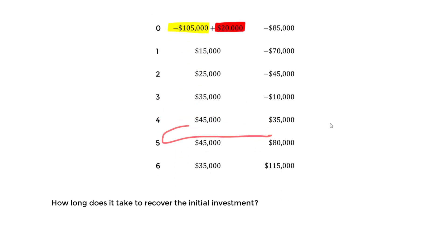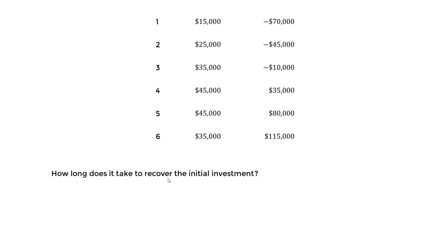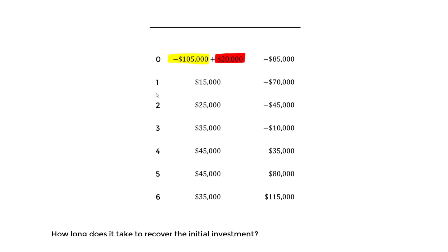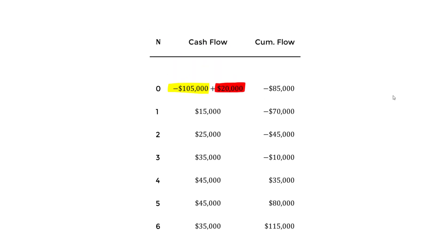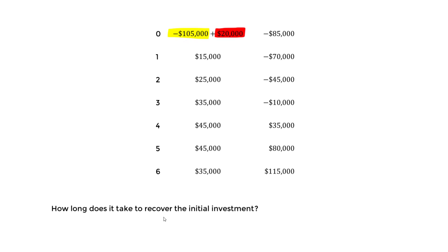The payback period — how long it takes to recover the initial investment — occurs when we begin to have a positive cumulative cash flow. In this case, it occurs somewhere between year three and year four, perhaps 3.2 or 3.5 years, since we transition from a cumulative value of negative $10,000 to positive $35,000.